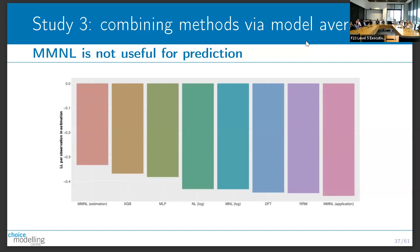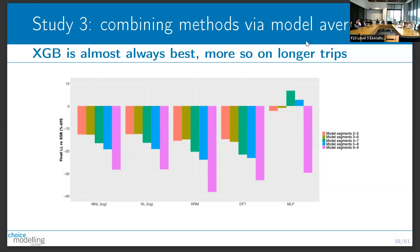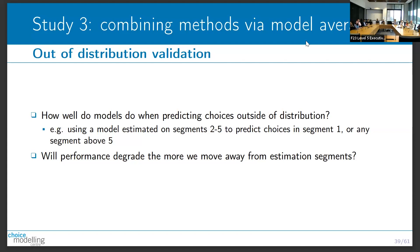The two machine learning models are much better than the choice models. Gradient boosting is almost always the best, and the advantages become even larger on longer trips. The real question is how well these models perform in out-of-distribution prediction. If we've estimated a model on short trips (segments 2-5), how well will those models predict segment 1 (very short trips) or segments 6-9 (longer trips)? Will performance degrade as we move away from the estimation segment?